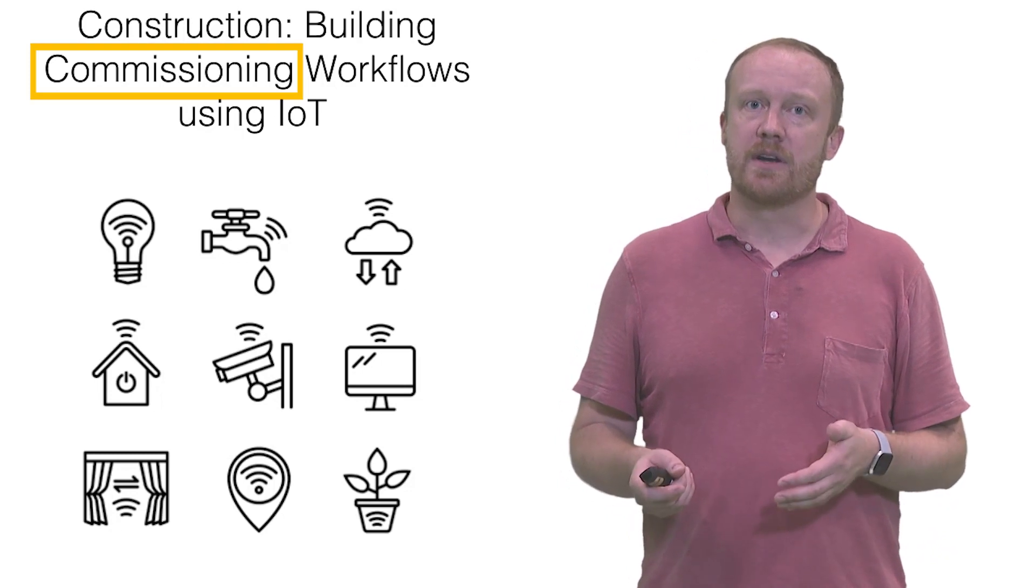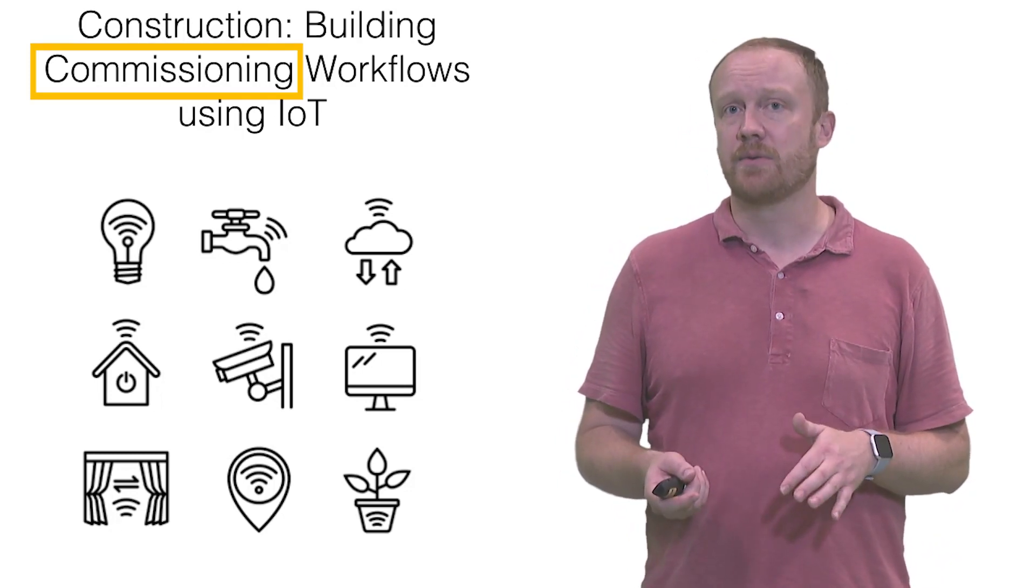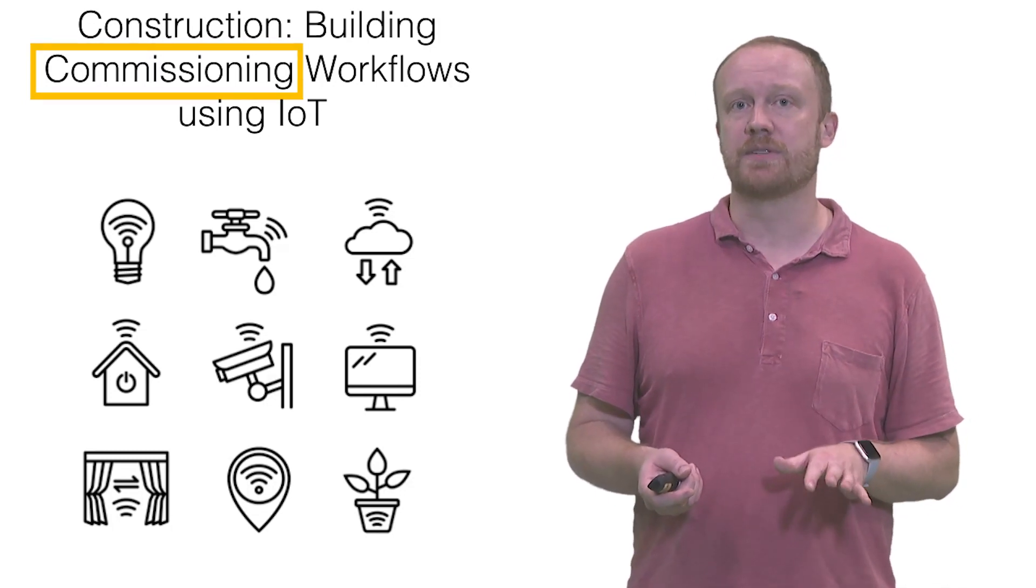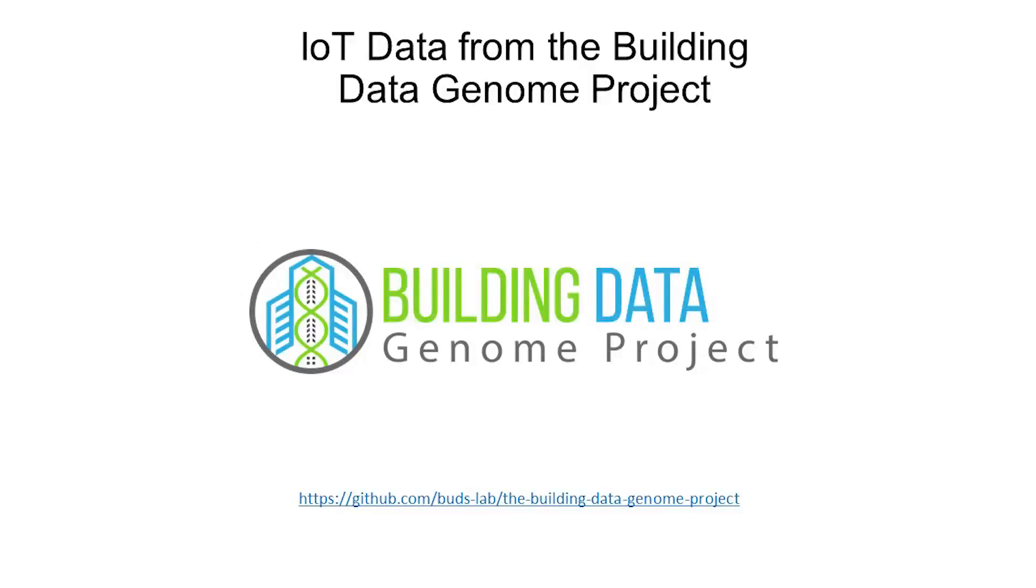These sensor networks are essentially modern Internet of Things, or IoT systems, and Python has specific libraries devoted to this type of data. The IoT dataset that we'll use in this course is from the Building Data Genome Project, an open source data repository which focuses on measured sensor data from actual buildings. The primary IoT data that we will use is from electrical power meters.